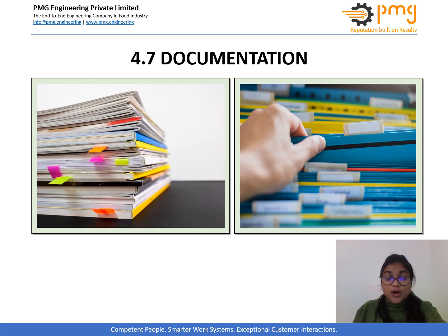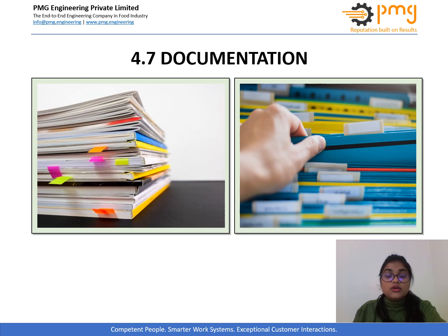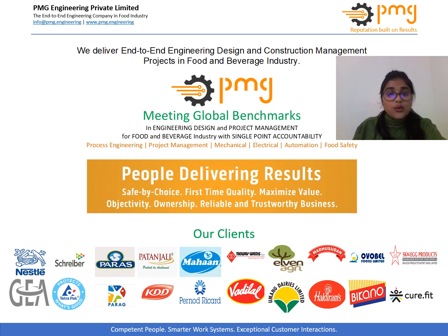Lastly, we will discuss about the documentation system. Efficient and accurate record keeping is critical to the application of allergen management within a food safety program. A simple record keeping system can be effective and easily communicated to employees. It should be integrated into existing operations using existing paperwork such as delivery invoices and checklists to record allergen status. A record of the risk management program should be retained with the risk assessment to demonstrate due diligence. With this, we came to the end of this module. If you find this module useful, please like, share and subscribe to our channel. Thank you and have a good time.